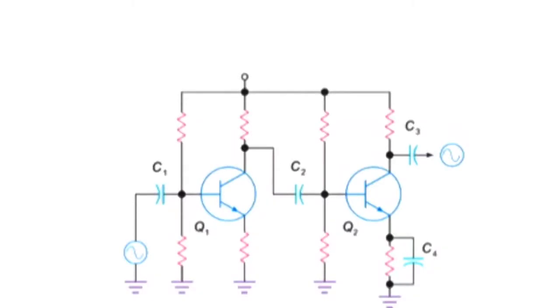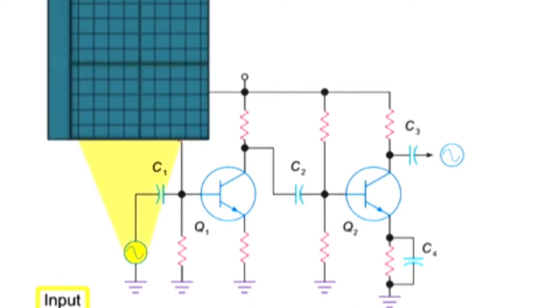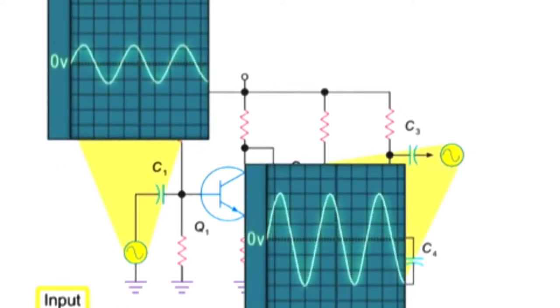This circuit represents a two-stage capacitively coupled amplifier. This amplifier successfully increases the size of an AC input signal without inverting its phase or adding any DC voltage at the output.